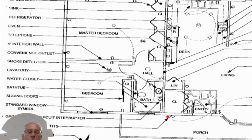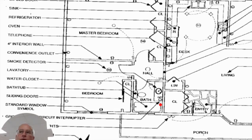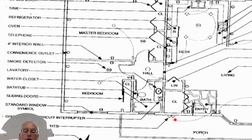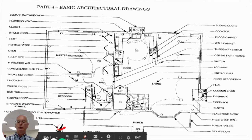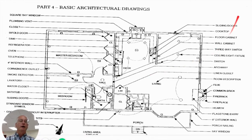Ground fault interrupt — that would be an outlet symbol, a circle with two lines and then the letters GFI next to it for ground fault interrupt. Those are the ones with the test and reset buttons on them that you find in bathrooms and kitchens. A couple of little triangles on the outside of the house would represent exterior lights, and then a compass — most drawings will have a compass showing which way is north, although on a floor plan you wouldn't necessarily have that.